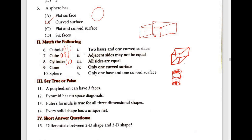Next, ninth one: cone. A cone has only one base and one curved surface. So only one base and one curved surface — the ninth answer is the fifth option.